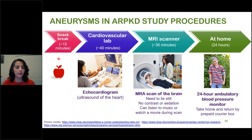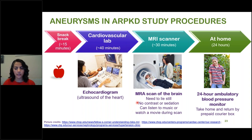Then you stay in the cardiovascular lab for the echocardiogram — just an ultrasound of the heart — and then the MRI scan of the brain takes about 30 minutes. You need to lie quite still, though a mature six-year-old able to follow instructions may manage this. You can listen to music or watch a movie during the scan, and there is no contrast or sedation given. During the day, you'll also receive an ambulatory blood pressure monitor to wear continuously for 24 hours; we provide a prepaid box to return it. Our coordinators will also go through some medical history questions.